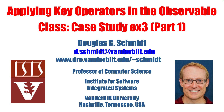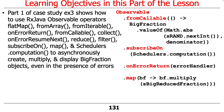We're going to walk through case study EX3, which has two parts — we'll cover the first part today. This shows a boatload of RxJava Observable operators, and it uses them to asynchronously create, multiply, and display BigFraction objects — even if something goes wrong, even if an error occurs.